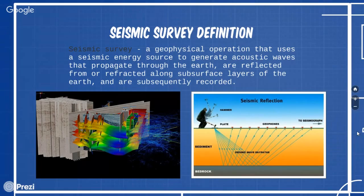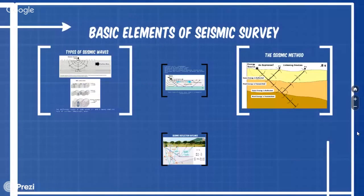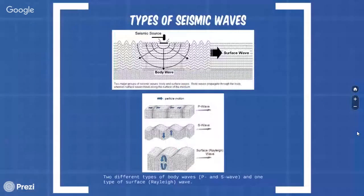The Seismic Survey is one form of geophysical survey that aims at measuring the Earth's properties by means of physical principles such as magnetic, electrical, gravitational, thermal and elastic series. Seismic wave can be categorized into two major types – body and surface wave. Body wave propagates through the entire body, whereas surface waves travel along the surface of the medium.